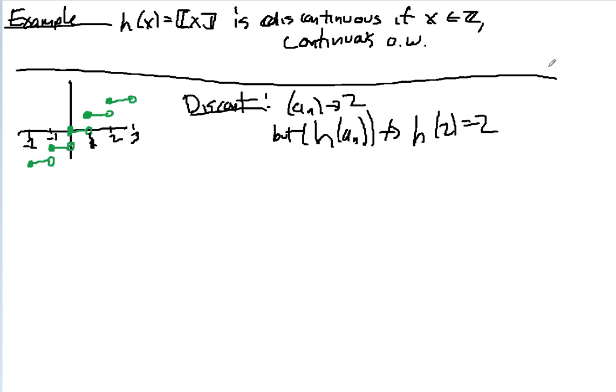And h of 2, of course, is 2, since 2 is the greatest integer that's bigger than or equal to 2. So here's my sequence. a sub n will equal 2 minus 1 over n. Pretty clearly this is going to converge to 2, so we're good.